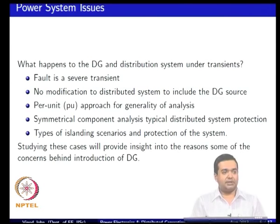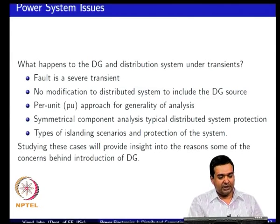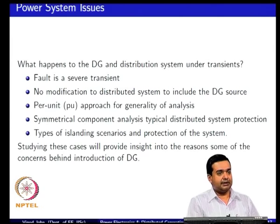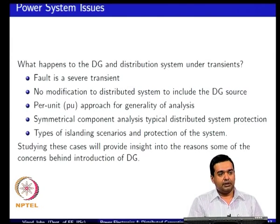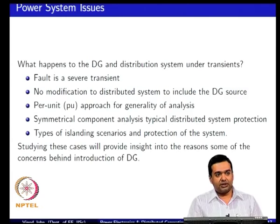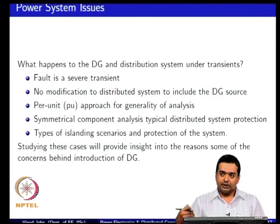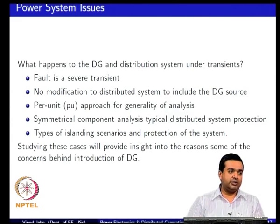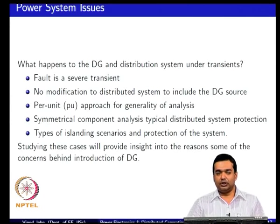We talked about three aspects of this course. The first aspect was power systems related, and a fault is a severe transient that you need to deal with in a power converter in a distributed generation system. One of the basic requirements is that you have the existing distribution system with its protection philosophy, and you do not want to modify the existing protection system when you add the distributed generation source. Suppose you have to rewire the whole distribution feeder when you connect your solar inverter — that would bring a big cost to overall society just because a person wants to add a distributed generation source.